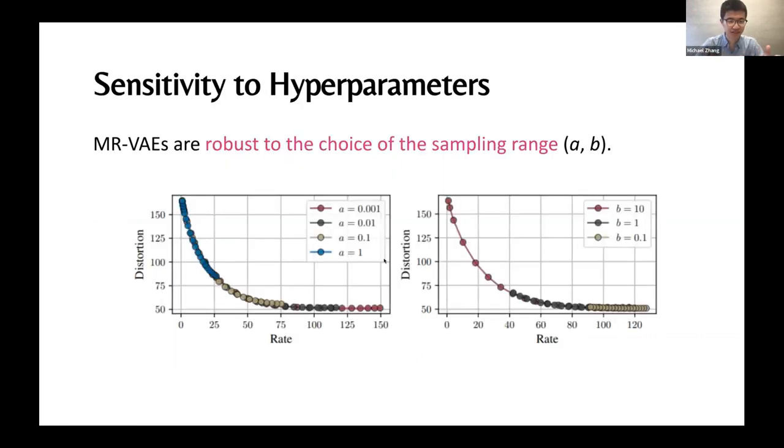Finally, one nice property is that we do have to specify our sampling range, where we're sampling our values of beta, and we show in our experiments that we're robust to this choice of sampling range. If A is a lower bound and B is upper bound, we run experiments where we either fix A and vary B or fix B and vary A, and you can see that the resulting rate distortion curves tend to overlap. There's not too much meta hyperparameter tuning you have to do by choosing how to specify A and B.